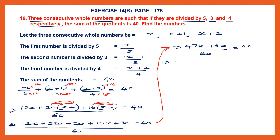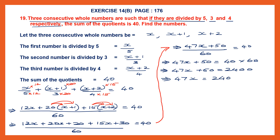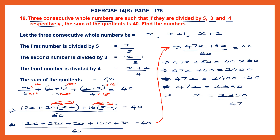We transpose 60 to the other side as multiplication: 47x plus 50 equals 40 into 60. Four sixes are 24, add two zeros: 2,400. So 47x equals 2,400 minus 50, which is 2,350. Therefore x equals 2,350 divided by 47, which gives 50. We have found the value of x — x is equal to 50.